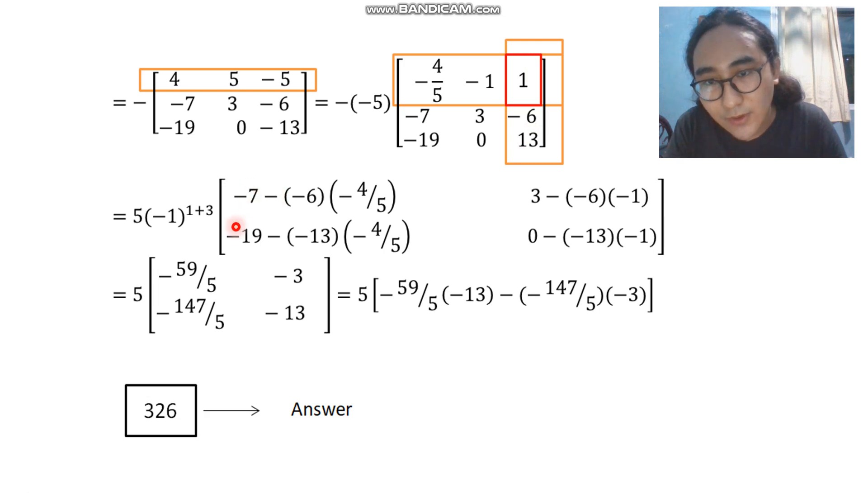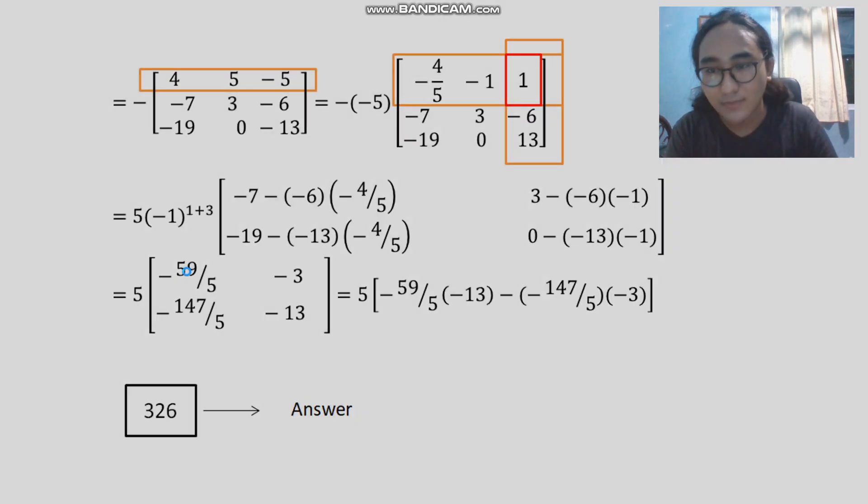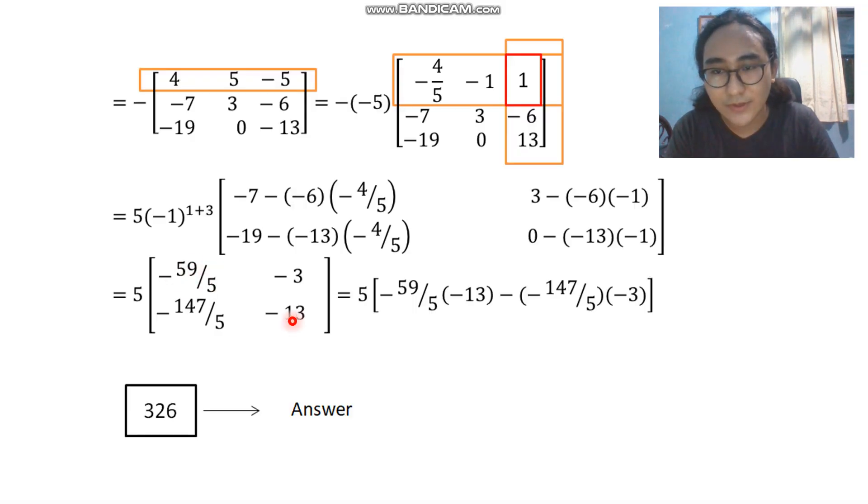So using the same method that I've discussed a while ago, this will give us a 2 by 2 matrix right here. A 2 by 2 matrix can simply be solved by using the Leibniz formula. We multiply this one to this one and subtract it by the product of this one. That will give us 326.